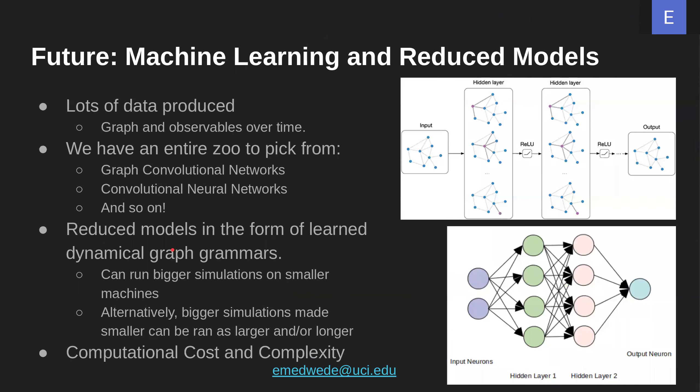Finally, on our final slide, essentially what we want to do is reduce the model by using machine learning. Lots of data can be produced — graphs and observables over time — and we have an entire zoo of algorithms to pick from in terms of machine learning. What we want to do is reduce models in the form of learned dynamical graph grammars or other observables. This could allow us to run bigger simulations on smaller machines, or alternatively run simulations that have been made smaller and then run them larger and longer. This should ultimately help us reduce computational cost and complexity. Thank you.